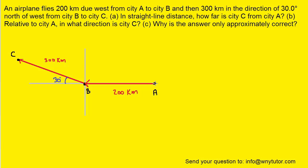An airplane starts at City A and travels 200 kilometers to the west to City B, and then it travels on to City C for 300 kilometers at an angle that is 30 degrees north of west. We've shown that angle right here. We're trying to figure out the straight line distance directly from point A to point C.